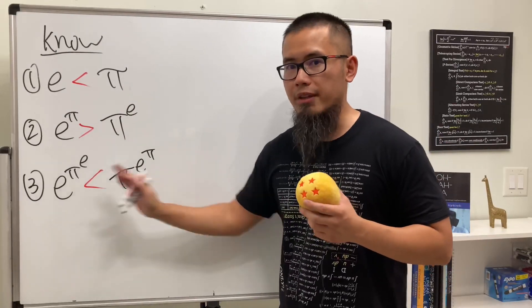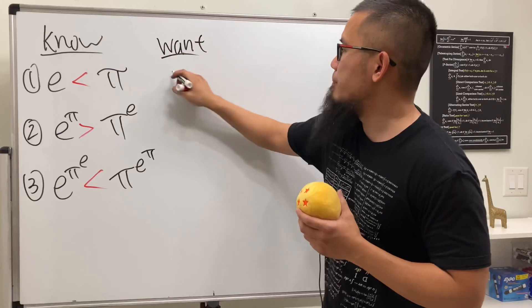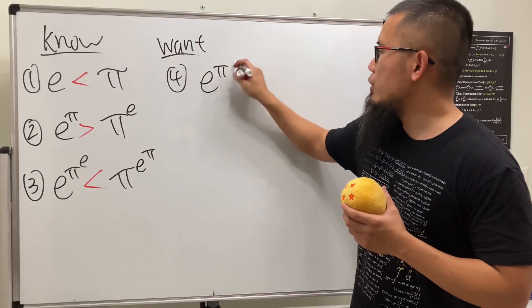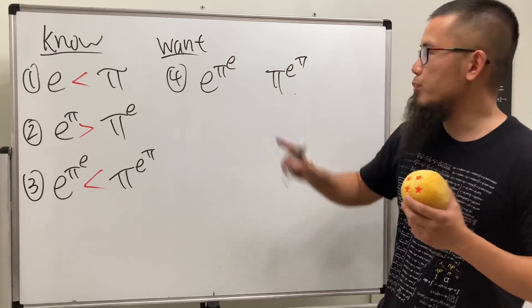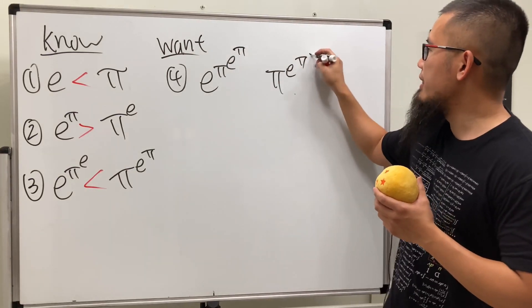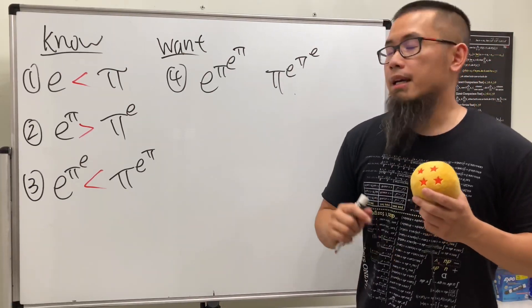Now this is what I would like to ask you. Number four right here, let's write that down again. e to the π to the e and then π to the e to the π. And you know I'm going to put another π's power here and then another e's power here. Now which one is bigger? I'll give you guys five seconds: five, four, three, two, one.